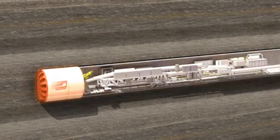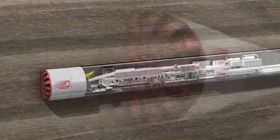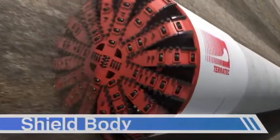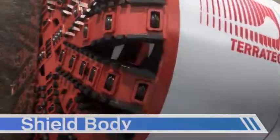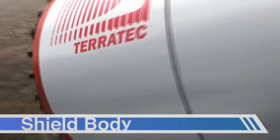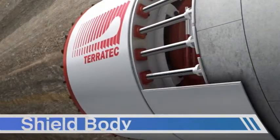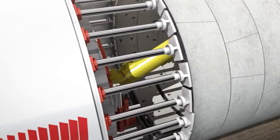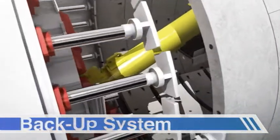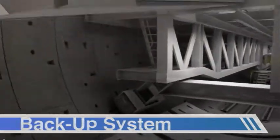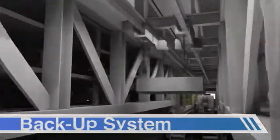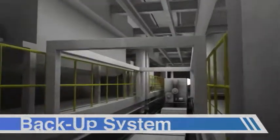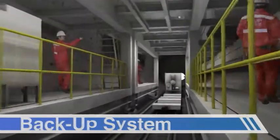The TBM is divided into two main parts. One is the shield, which is in direct contact with the soil and the excavation face and isolates the interior of the machine from the ground with a steel skin. The other main part is the backup system, which is a rolling structure that follows the shield and which carries all the auxiliary systems to allow the continuous advance of the TBM.